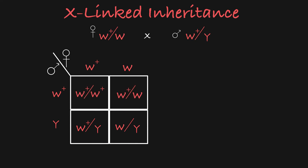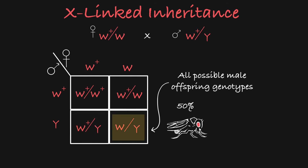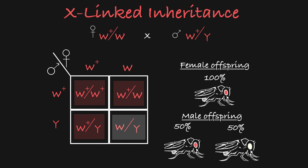Looking at the possibilities for male offspring genotypes, half of the male offspring will have the dominant W-plus allele, leading to a red-eyed phenotype, and the other half will have the recessive W-allele, leading them to have white eyes. This is a classic example of how X-linked traits differ from autosomal trait inheritance — you can see a difference in phenotype distribution when you compare the male and female offspring. Because the male parent only carries the dominant W-plus allele on his one X chromosome, all of his female offspring receive that allele from him and will have the dominant red-eyed phenotype.